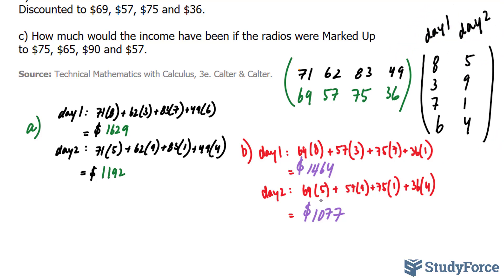For part C, we're asked: how much would the income have been if the radios were marked up to 75, 65, 90, and 57? So once again, I'll be expanding my first matrix to include these prices: 75, 65, 90, and 57. And you find the answer to C by doing the same thing as you did in parts A and B.